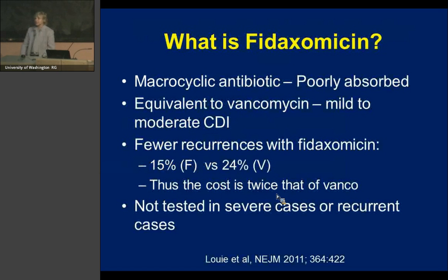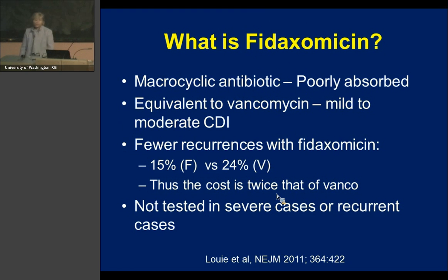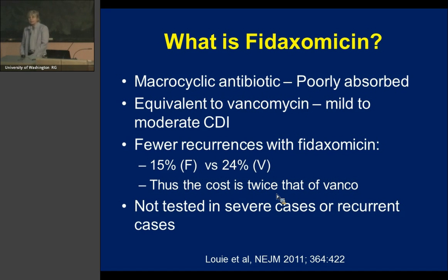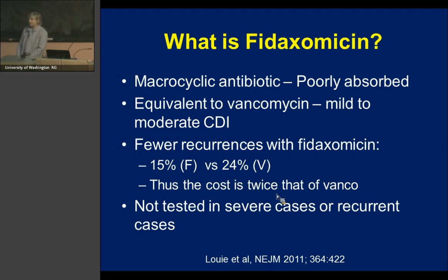Fidaxomicin has been available for less than two years. It is a new class of antibiotic that is poorly absorbed and is felt to not change the microbiome as much as other antibiotics. In studies of mild-to-moderate C. diff, it was equivalent to vancomycin. The notable finding is that patients treated with fidaxomicin had a lower recurrence rate — 15% compared to 24% with vancomycin — which led the company to charge twice as much. Importantly, it has not been tested for severe C. diff or for recurrent C. diff.